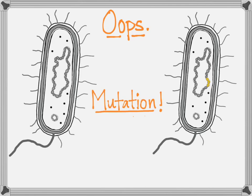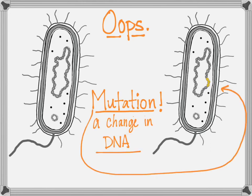When a mistake happens while replicating DNA, we call that a mutation, and it causes a change in the DNA. You can see that in this second cell there's a little section of DNA that isn't exactly like the mother cell it came from.